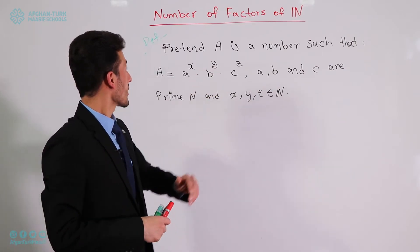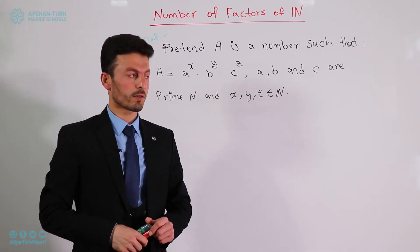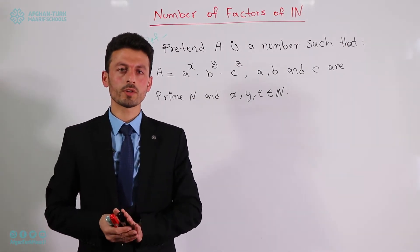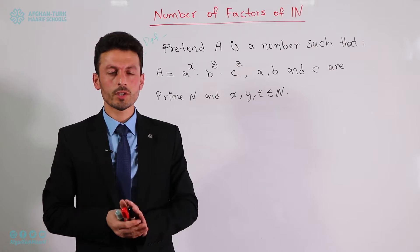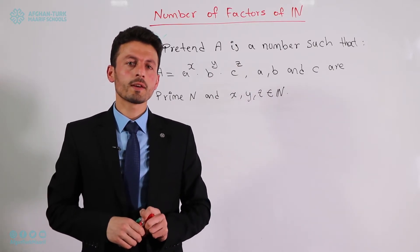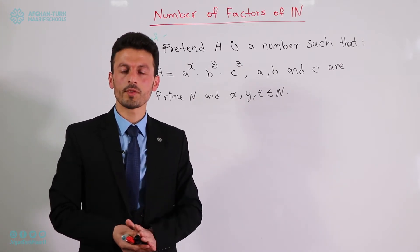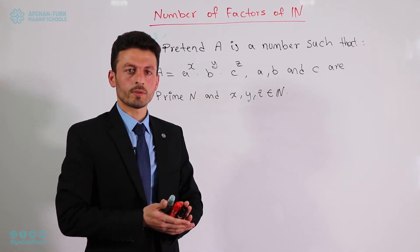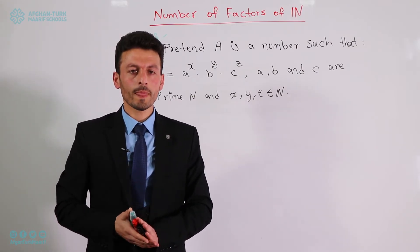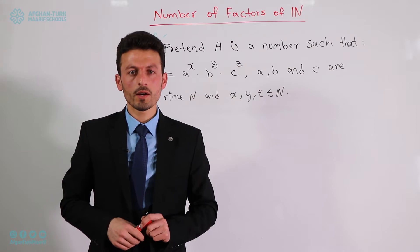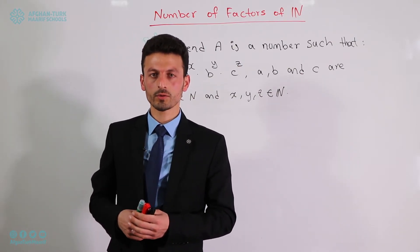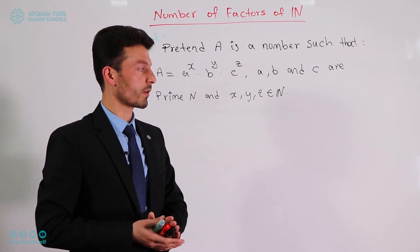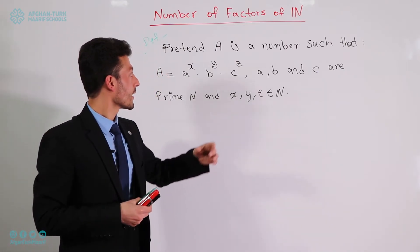Now we come to our main topic: finding the number of factors of natural numbers. This means finding how many factors a number has without counting them all. For small numbers like 12, 24, or 36 we can easily list all factors, but for larger numbers it becomes very difficult. So we need a shortcut method to find the number of factors.